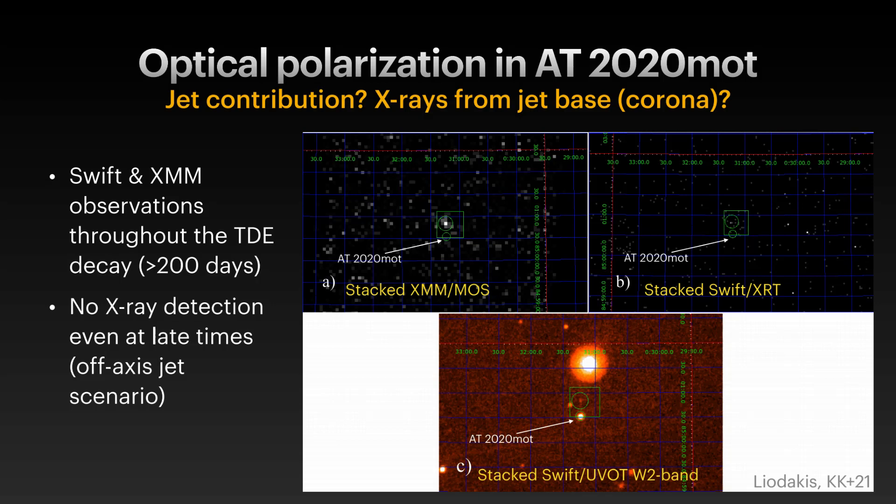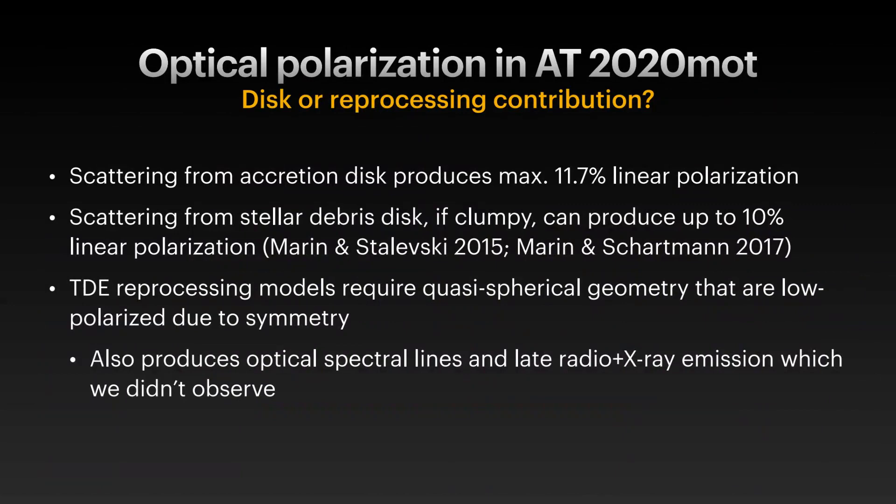We checked the X-rays because jets can produce X-rays. We had Swift observations but the angular resolution was bad, with only hints of signal. We applied for XMM time and found a source very close by, but it doesn't match the location of the TDE. We didn't find any X-ray emission up to about 200 days, suggesting the accretion disk — and not the jet — hasn't formed yet.